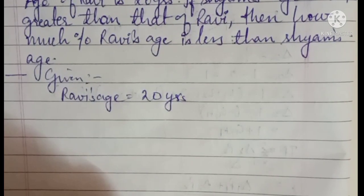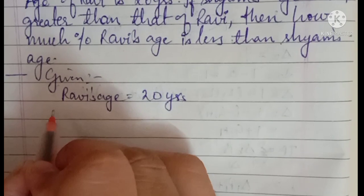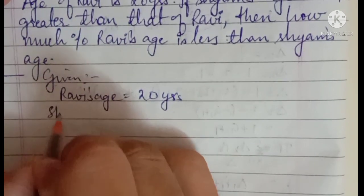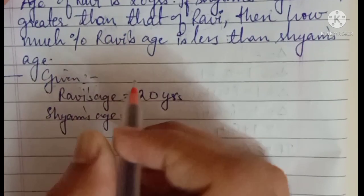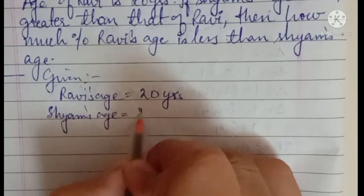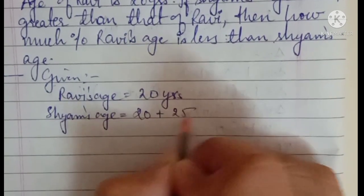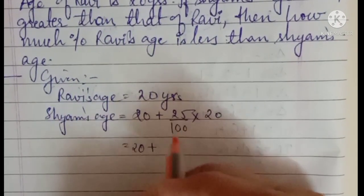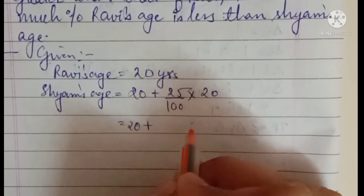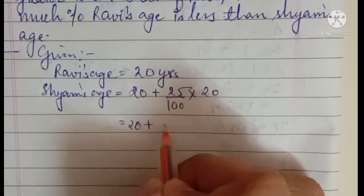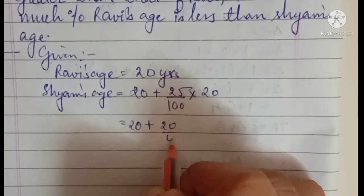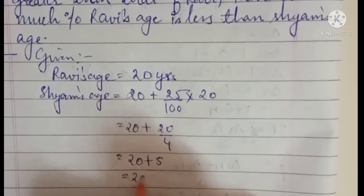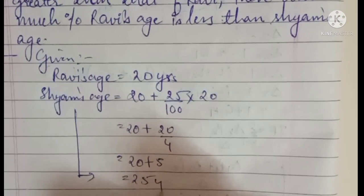Shyam's age is 25% more, that is greater than Ravi's. So how do you write that? It's 20 plus 25% of 20. At the basic level: 25% of 20 equals 25 upon 100 times 20, which simplifies to 25 upon 4, giving us 5. So Shyam's age is 25 years.